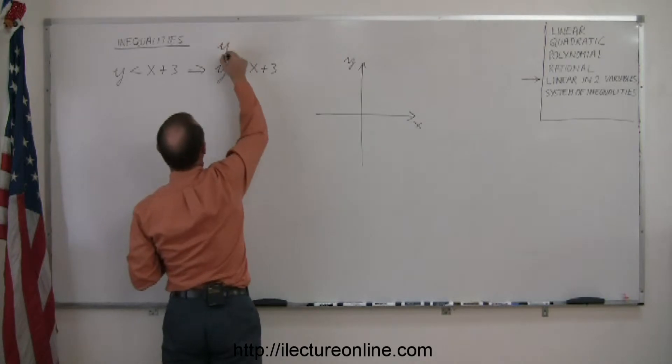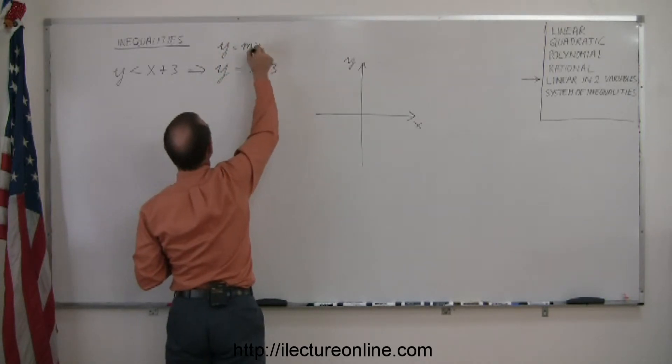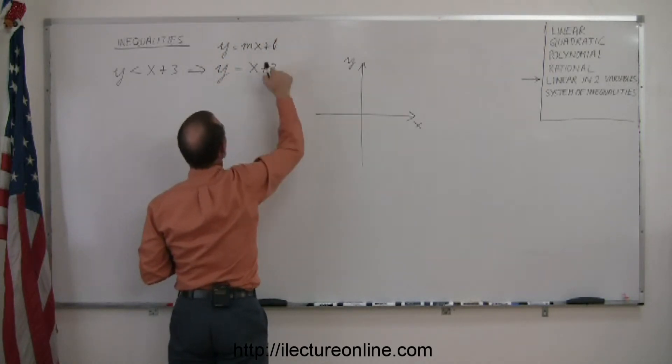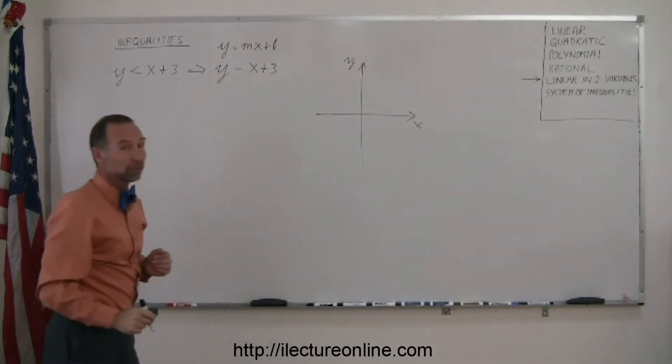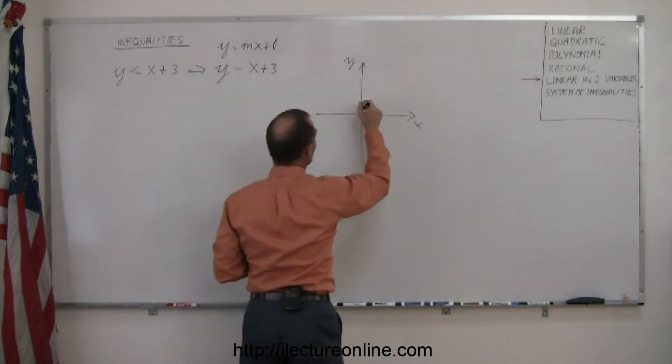Remember, this is an equation in the form of y equals mx plus b. In this case, b, the intercept is 3, the slope is 1. So the intercept is y equals 3, that's up here.